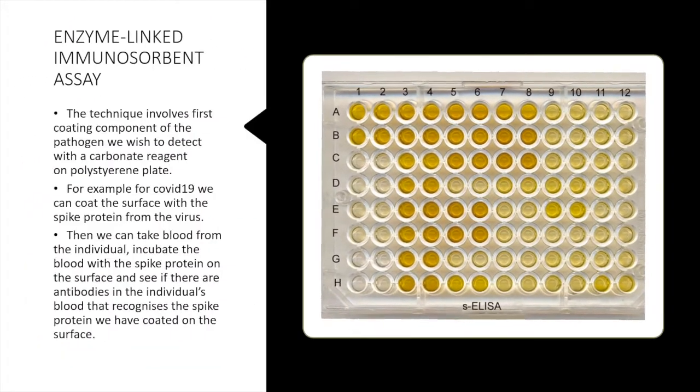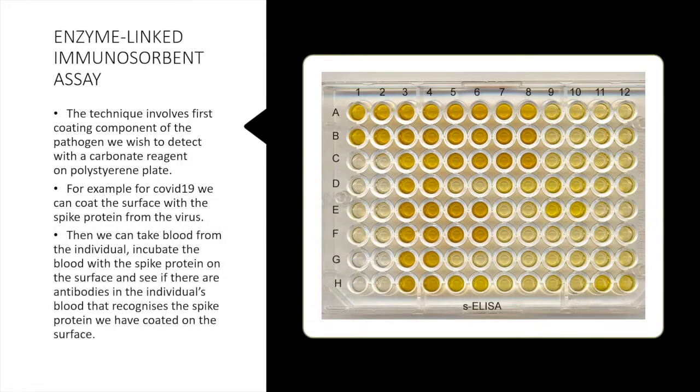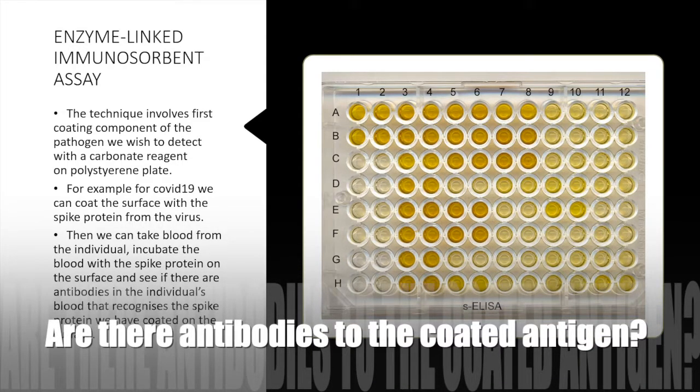The process for ELISA involves you first coating the surface with a viral or bacterial component that you want to detect generally. And then you take blood from the individual that you want to determine if they've been exposed to that particular pathogen. If you're looking at SARS-CoV-2, you incubate the blood with the spike protein that's been coated to the surface of the 96-well plate to see if there are antibodies in the blood that recognize the spike protein.